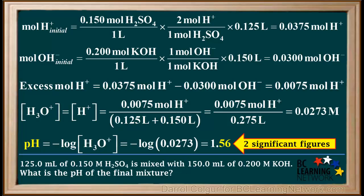Now we have answered the original question. The pH of the final mixture is 1.56. This low value means the solution is fairly acidic. This is reasonable because a strong acid is in excess in this case.